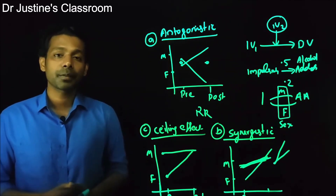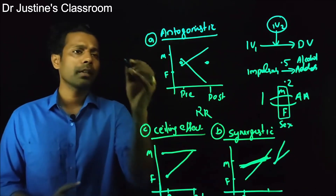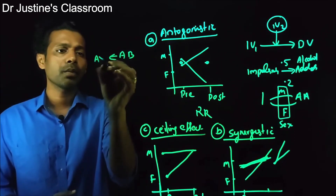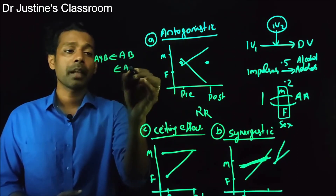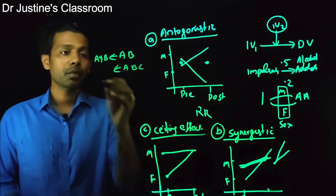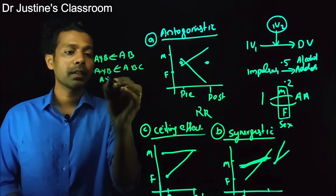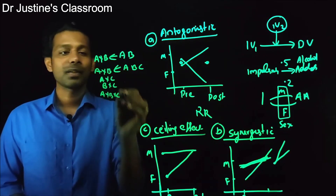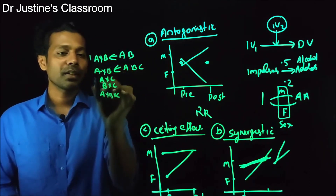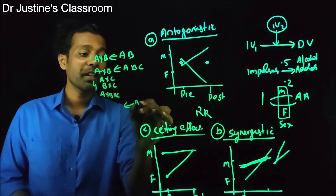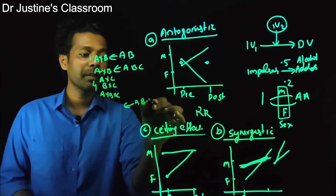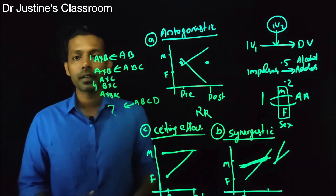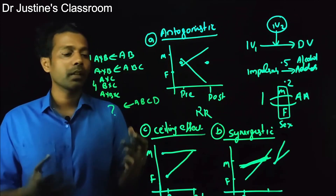Now the common question is: how many interaction effects are possible? If you have two independent variables — variable A and variable B — you have one interaction: A × B. If you have three independent variables — A, B, and C — you have A×B, A×C, B×C, and A×B×C, giving four interactions. With four independent variables, there are even more possible interactions.